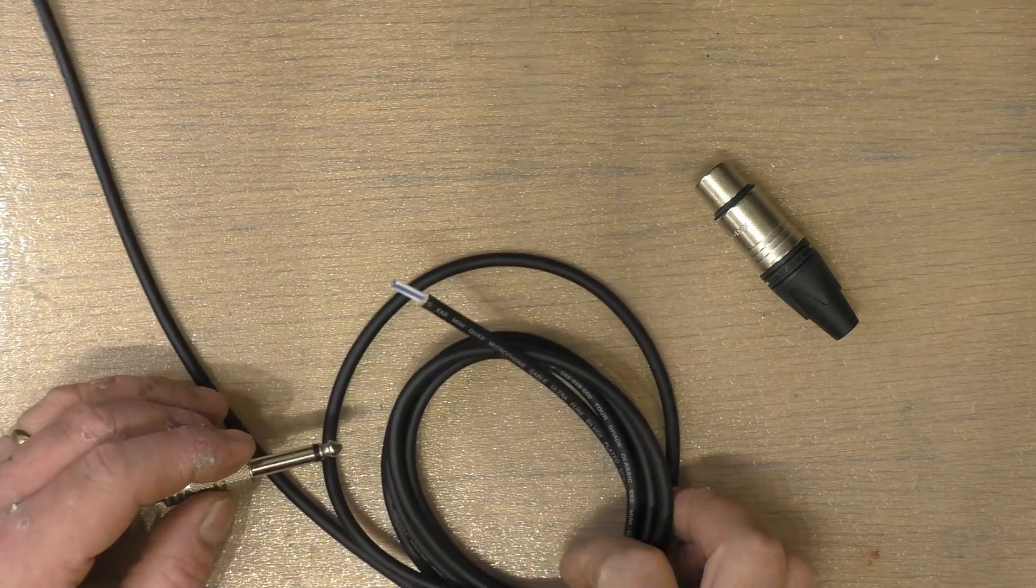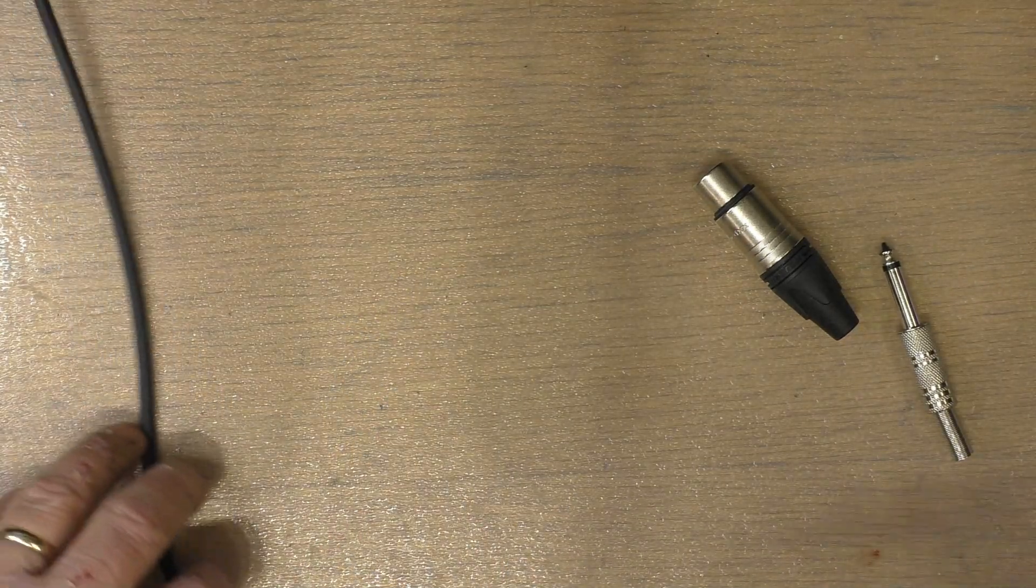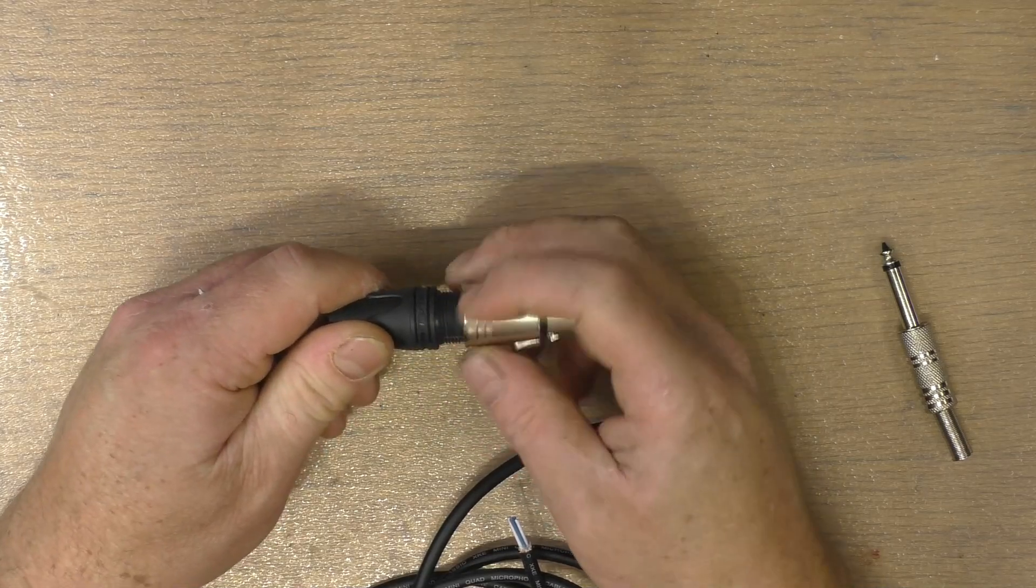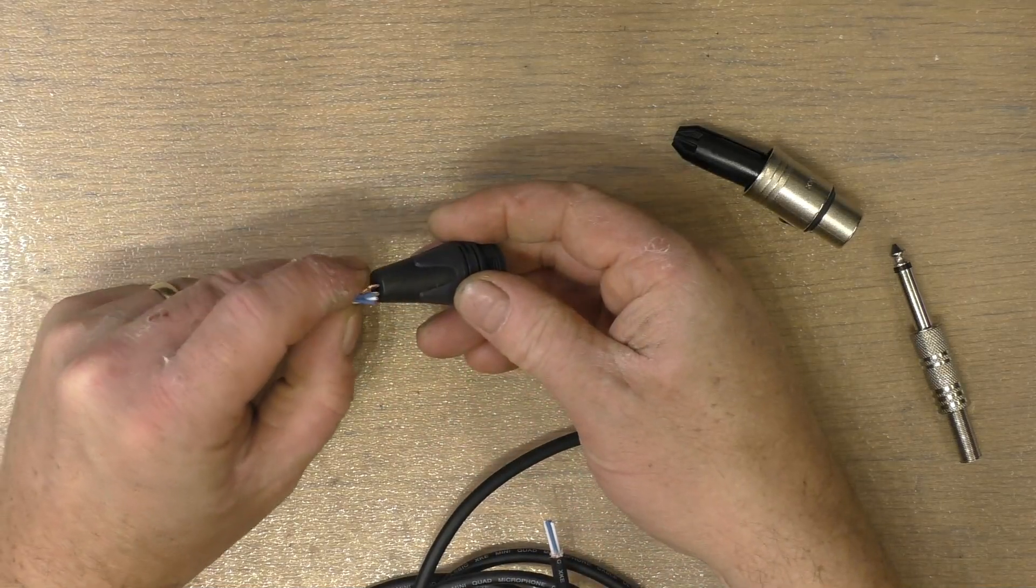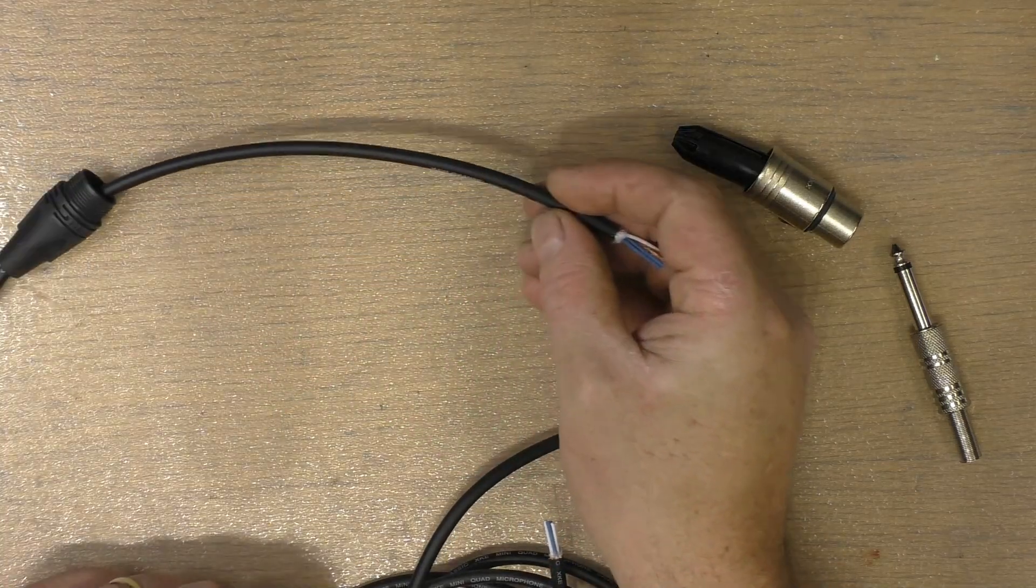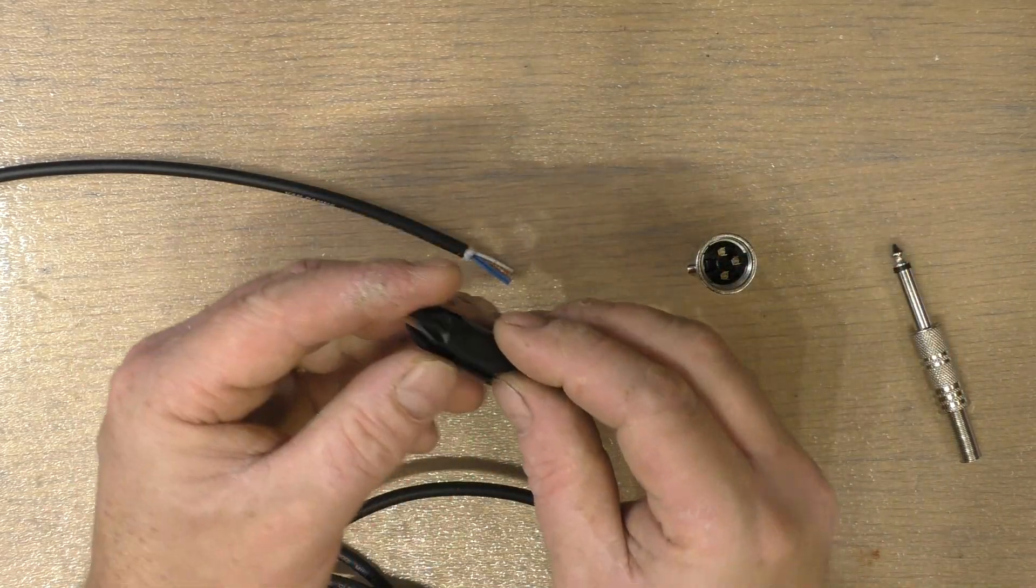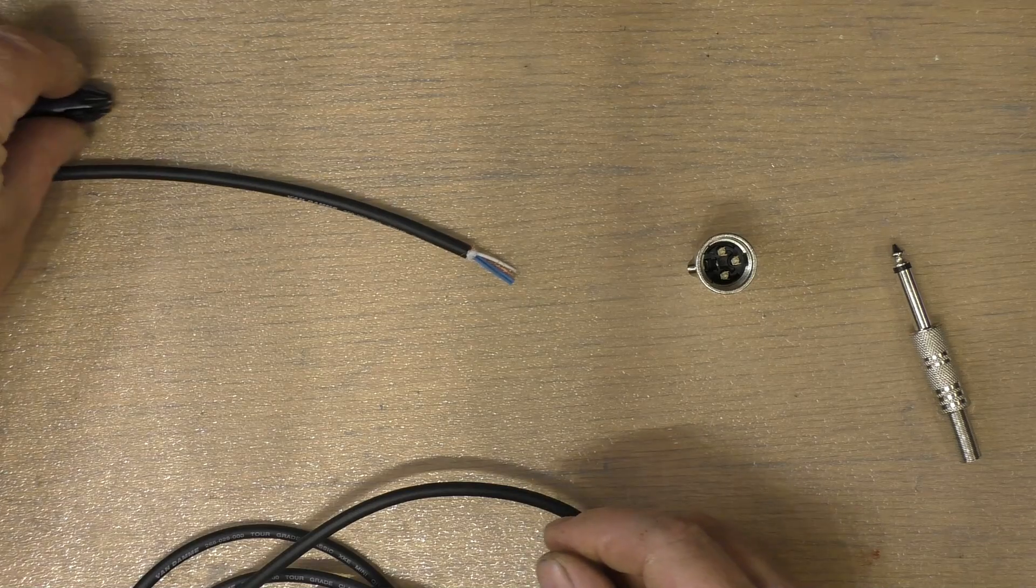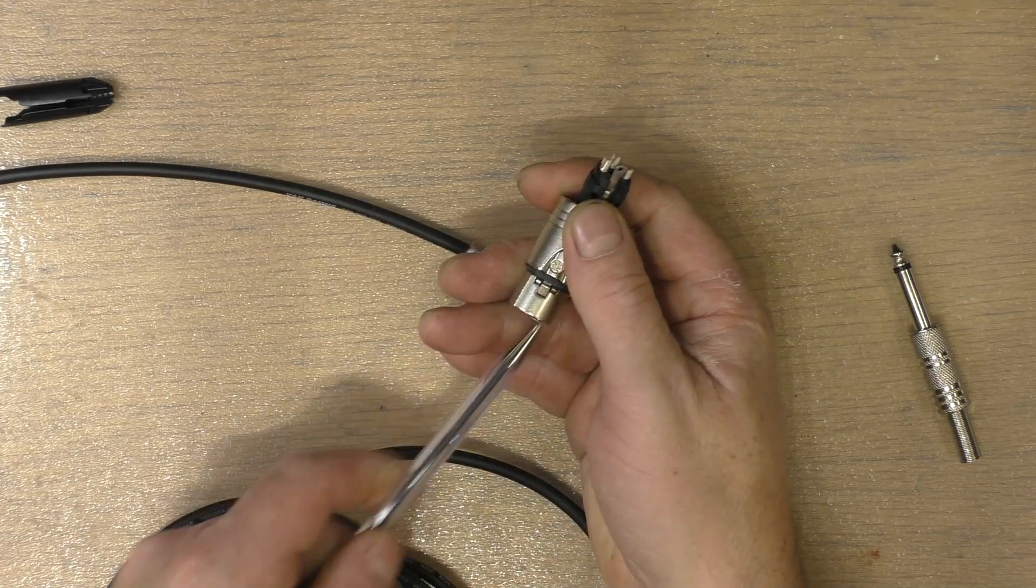The very first thing you need to do is unscrew the back cover of the XLR and feed your cable through it. You can just pull that back out of the way, and you take this out, this is like a cable clamp stroke insulator.